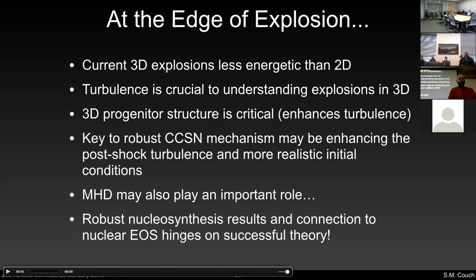A question from Inouye: supernovae are clearly not spherical and highly complicated, yet for all the chemical evolution studies people usually take yields from 1D calculations because they're more affordable. What are your thoughts on nucleosynthesis from 1D calculations?